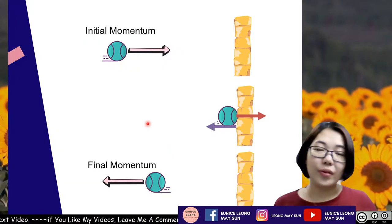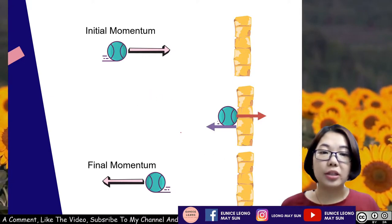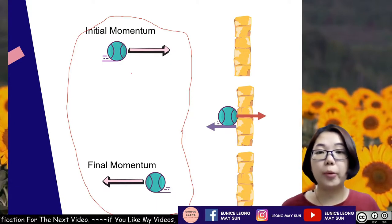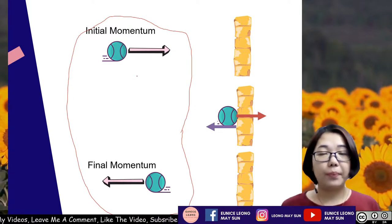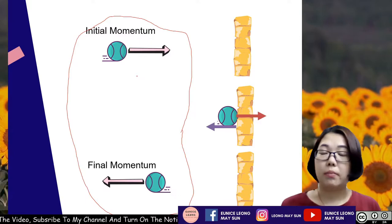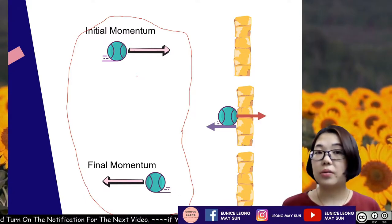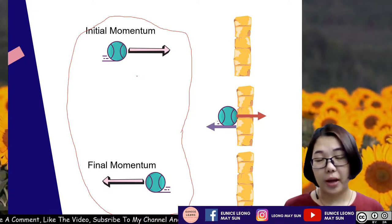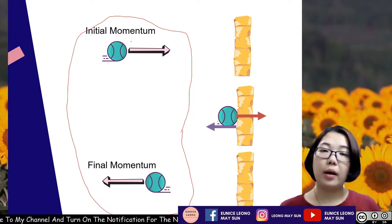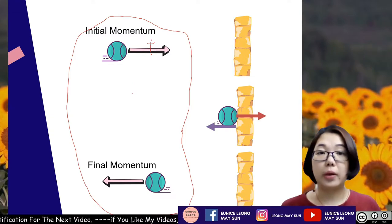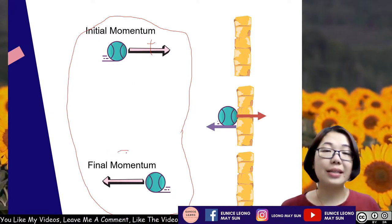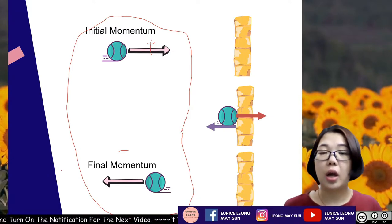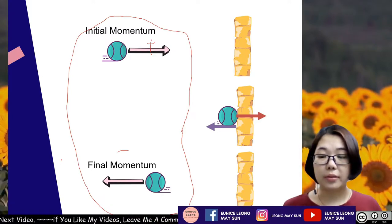Impulse is a vector quantity. Momentum is also a vector quantity, and velocity is also a vector quantity. A vector quantity has both direction and magnitude. In this case, always remember: when pointing towards the right, the sign convention for momentum is positive; when moving towards the left, the sign convention is negative — or it depends on your chosen direction of motion. Always include the positive and negative sign in your calculations when dealing with velocity, momentum, and impulse.